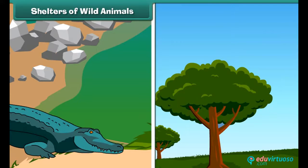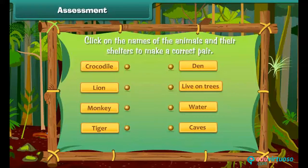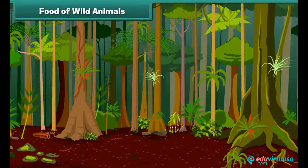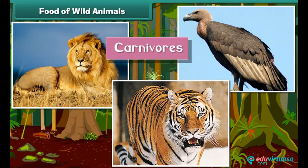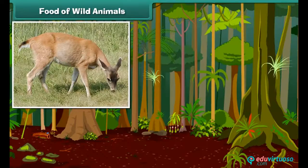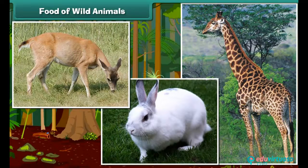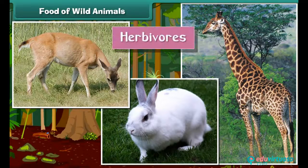Students, drag and drop to match the following. Let us look at what wild animals eat for food. Lions, tigers, and vultures are carnivorous animals — they eat the flesh of other small animals. Deer, giraffe, and rabbits are herbivorous animals as they eat only plants.